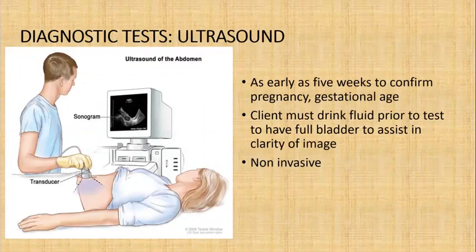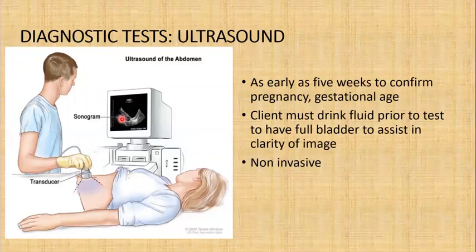Let's look at ultrasound. A transducer on the abdomen transmits sound waves that show a fetal image on the screen. It is usually done as early as five weeks to confirm pregnancy and gestational age. It is also used to determine position, number of fetuses, measurements, and other structures like the placenta. Clients must drink fluid prior to the test to have a full bladder to assist clarity of image. It is non-invasive with no harmful effects to mother or fetus.